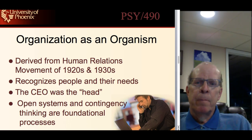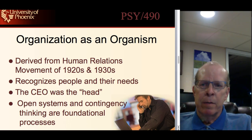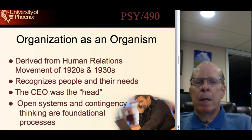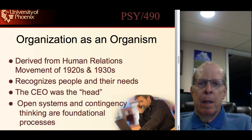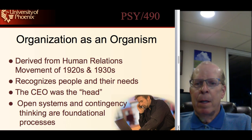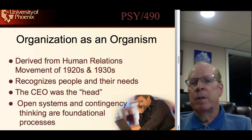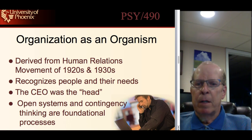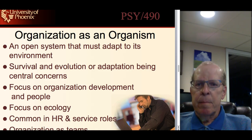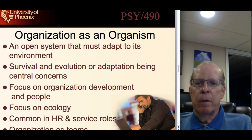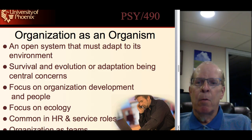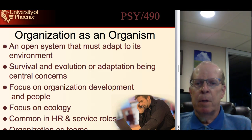It also evolved to become organization as an organism. This was derived from the human relations movement of the 1920s and 30s, and it recognized people and their needs — the CEO was considered the head. Open systems and contingency thinking were both foundational processes. The organization as an organism is an open system that must adapt to the environment, so the environment became very important along with survival and evolution. The focus was on development, people, and ecology.